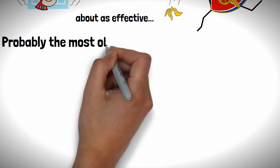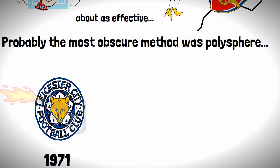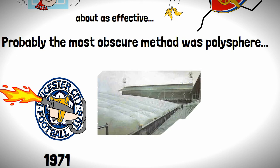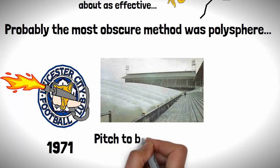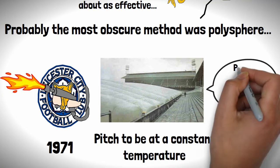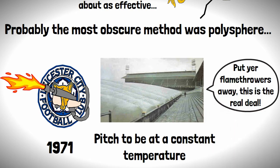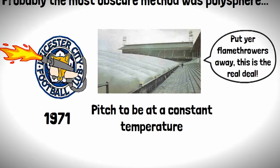Probably the most obscure method was the polysphere which in 1971 was Leicester City's solution to combating a frozen pitch. This essentially consisted of a massive tent which covered the pitch and blowers underneath allowing the pitch to be a constant temperature. As daft as it looked it was actually quite effective at staving off frozen pitches but unfortunately would not catch on by other clubs.